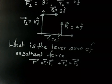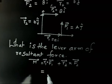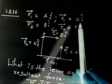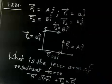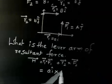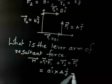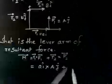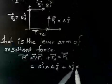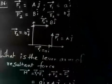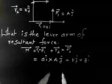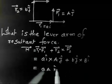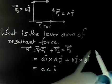Let me discuss the solution. Moment: R1 is AI and F1 is AJ, so R1 cross F1 is AI cross AJ. Plus R2 is BJ and F2 is BI, so R2 cross F2 is BJ cross BI. Now I cross J is K, so AI cross AJ gives A squared K.